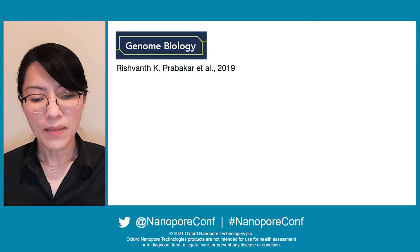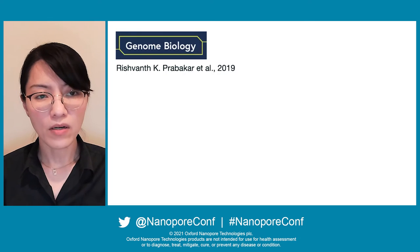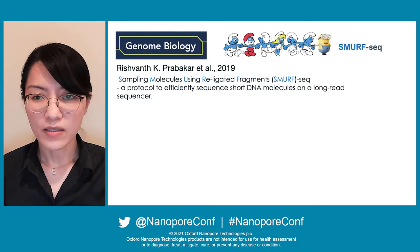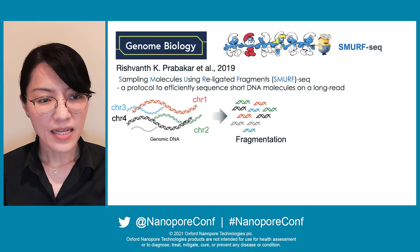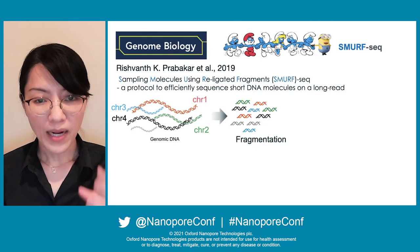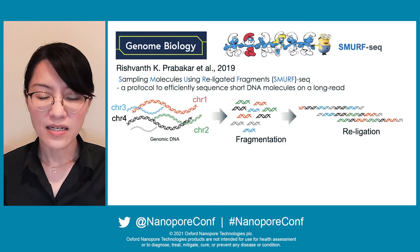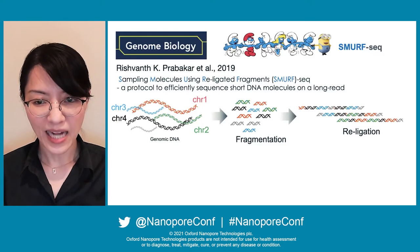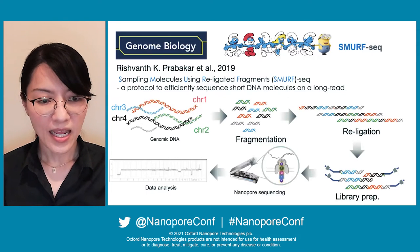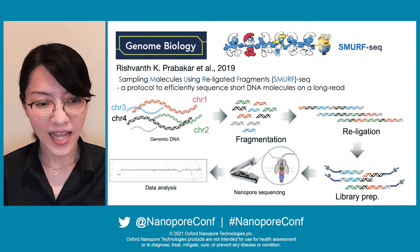For the copy number variation, I did not develop an entirely new method, but followed Dr. Prabhakar's protocol called SMURB-seq. The idea of this protocol is: from the genomic DNA, it will be fragmented randomly using a restriction enzyme, then re-ligated using a ligase enzyme, an adapter added for nanopore sequencing, and then an R package is used for data analysis.